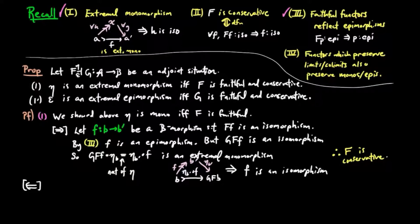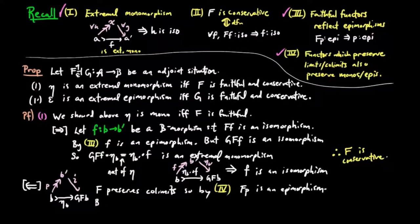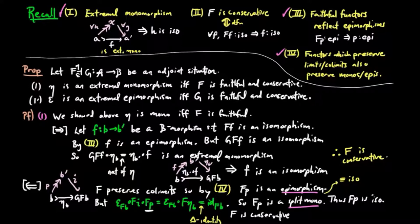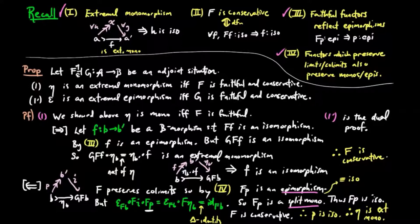So G∘F∘f∘eta_B equals eta_{B'}∘f by naturality of eta, and eta_{B'} is also an extremal monomorphism. So we have the factorization of eta_{B'}∘f with f an epimorphism, and by the definition of an extremal monomorphism, f is an isomorphism. Therefore F is conservative. Conversely, we assume F is conservative. Given a factorization of eta_B with P an epimorphism, we want to show P is an isomorphism. Since F is coadjoint, it preserves co-limits, and so by (4) above, F∘P is an epimorphism. But epsilon_{FB}∘F∘I∘F∘P equals epsilon_{FB}∘F∘eta_B, since I∘P equals eta_B, and this equals the identity on FB by the triangle identity. So F∘P is also a split monomorphism, thus F∘P is an isomorphism. But F is assumed to be conservative, so P is an isomorphism, and therefore eta is an extremal monomorphism. Since (1') is just the dual proof, we are done. And that completes this section.